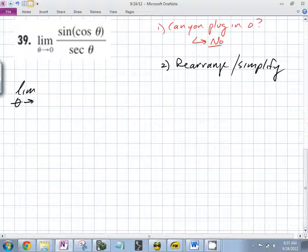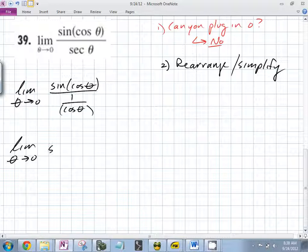We have the limit as theta goes to zero. Can you do anything to the top? Not really, that's sine of cosine. Is that sine times cosine? No. What would you turn secant into? One over cosine theta. Limit as theta goes to zero, you end up with sine of cosine theta times cosine theta.